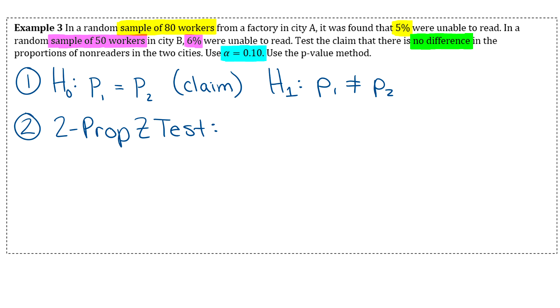You can try to do it right there in your calculator or you can back out of that test and figure out these values separately. To get x1, you're going to do 5% of 80, so 0.05 times 80 equals 4. Then your n1 is going to be 80.